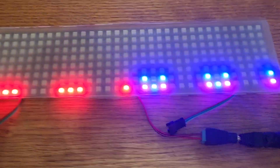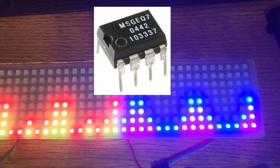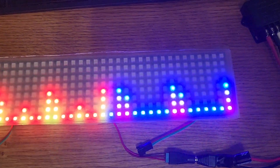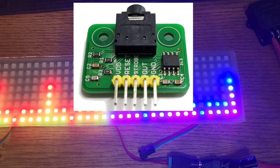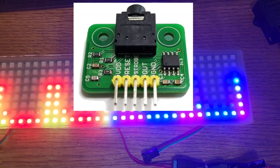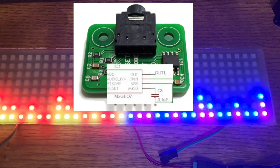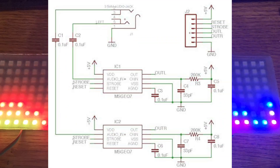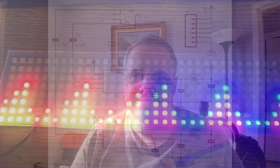If you're using the IC and not the breakout board, you'll want to check the datasheet because there are some capacitors and resistors you'll need to add. If you're using the breakout board, all those resistors and capacitors are included on board, so you don't have to worry about that, as this diagram shows.